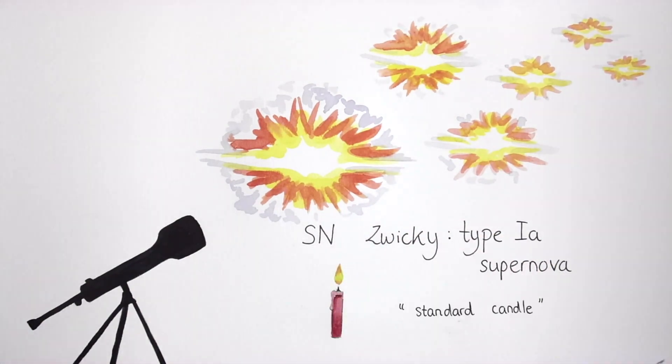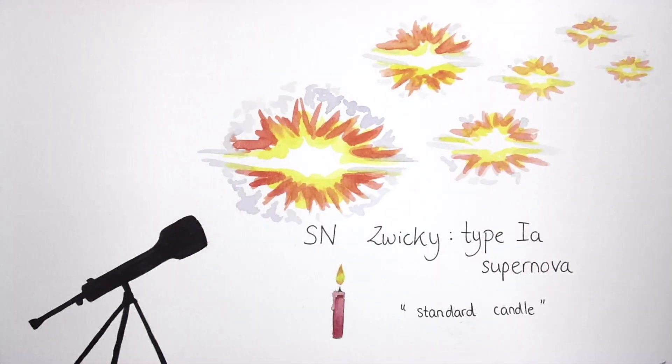But Supernova Zwicky didn't look like other Type Ia supernovae. It was much brighter and further away.